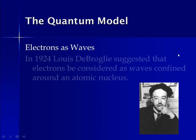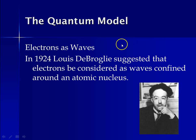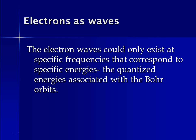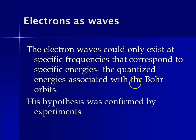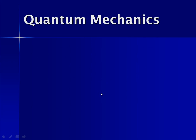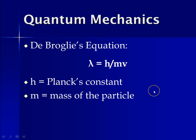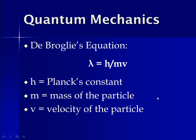Louis De Broglie explained that electrons can be thought of as waves confined around an atomic nucleus. Electron waves can only exist at specific frequencies corresponding to the quantized energies that Bohr described in his orbits, and his hypothesis was confirmed by experiments. De Broglie's equation states that wavelength lambda equals h — Planck's constant — divided by mv, where m is the mass of the particle and v is its velocity. You won't be responsible for calculating this, but it is in your chapter.